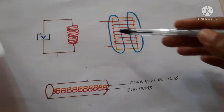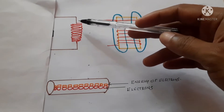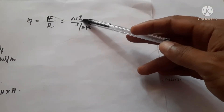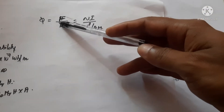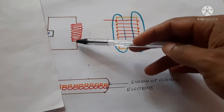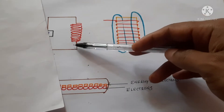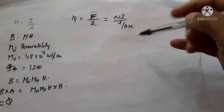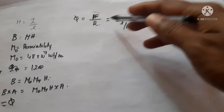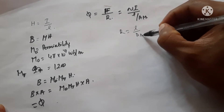The flux through an inductor depends on the number of turns. If more turns are present and a current passes through, each turn produces a magnetic field. Flux is also directly proportional to the current passing through it, and inversely proportional to the reluctance. Reluctance means how much the material resists the flow of flux. Air does not allow flux to go as smoothly as iron, so air has higher reluctance.